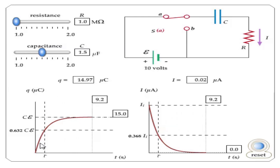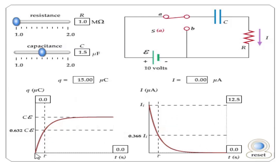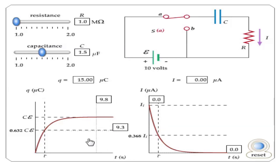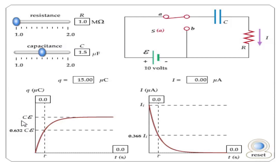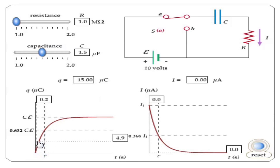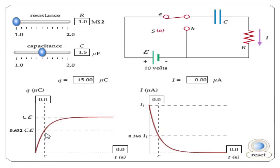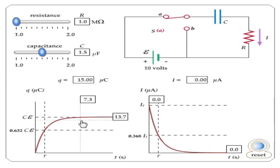This is our charge stored versus time graph and the current versus time graph in the charging process. Ce is the maximum charge that can be stored in the capacitor. The moment we close the switch, the charge stored in the capacitor approaches the maximum value Ce, until such time that the maximum value Ce is reached and no more charges are added to the capacitor — meaning the capacitor has been fully charged.